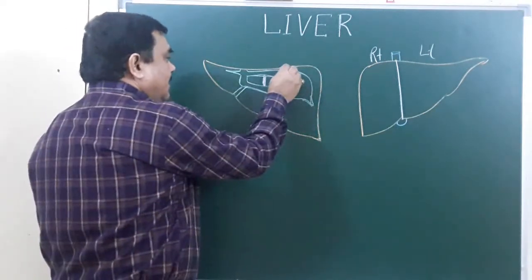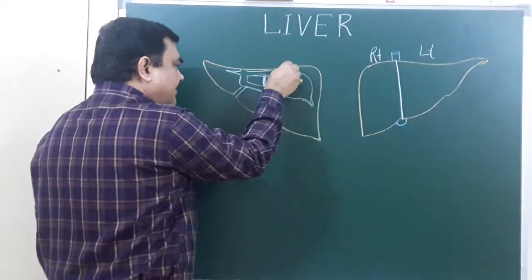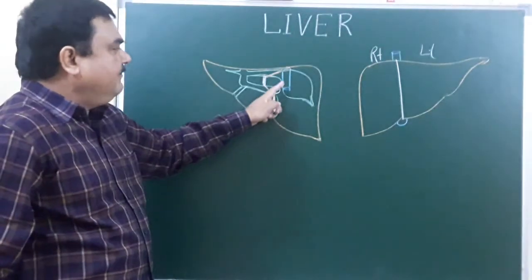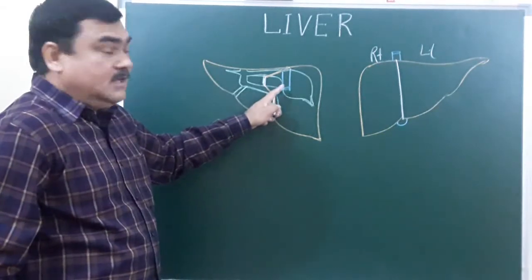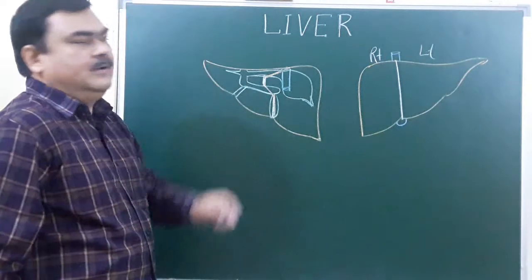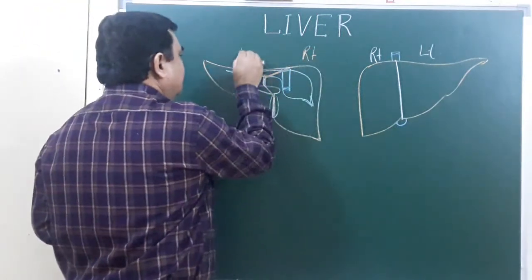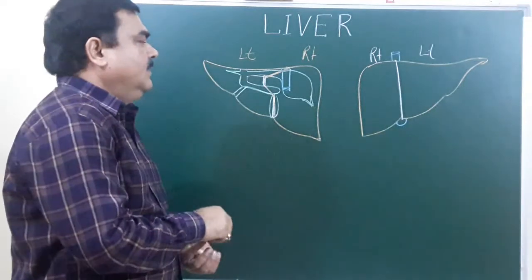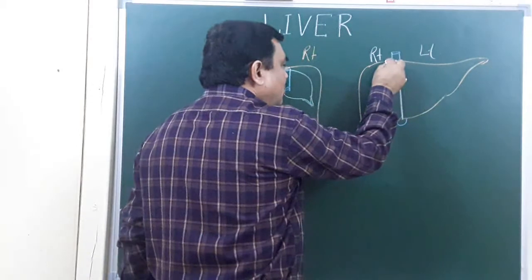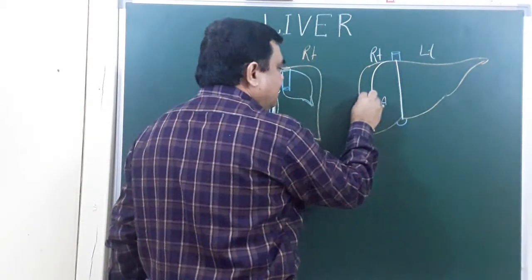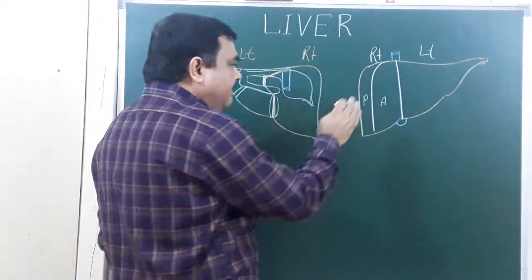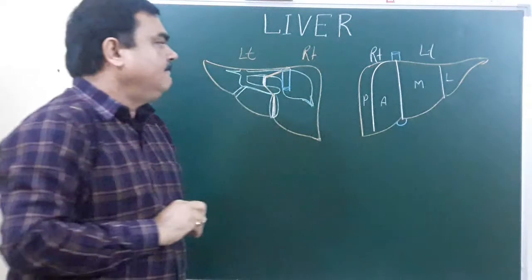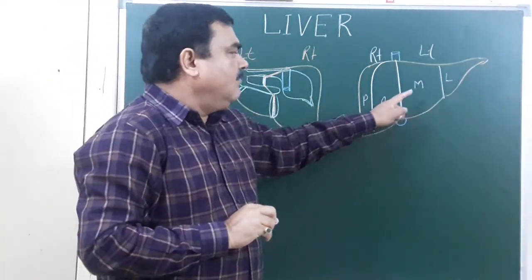The line passes from the inferior vena cava through the fossa of the gallbladder, completing the posterior inferior division. This is the physiological division of the liver into right and left lobes. The right lobe is further divided into two parts: anterior and posterior. The left lobe is also divided into two parts: medial and lateral. So there are four segments — anterior, posterior, medial, and lateral.